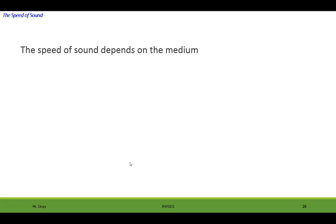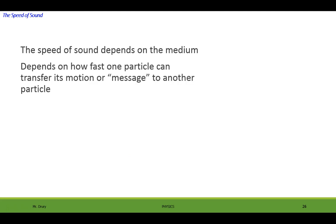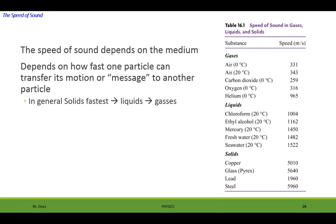The speed of sound depends on the medium. It depends on how fast one particle can transfer its motion or message to another particle. In general, it travels fast in solids, then in liquids, then in gases. So it travels the slowest in gases, as you can see here, and the fastest in solids.